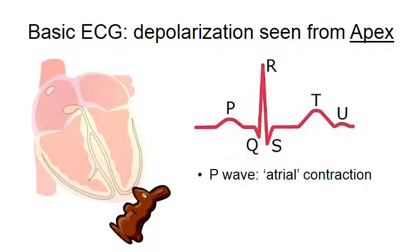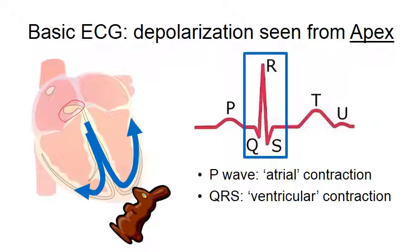After that, there is a perfectly timed delay at the AV node while waiting for the ventricles to fully fill. Then comes the fast conduction through the His-Purkinje system into all of the ventricular muscle. This is recorded in the ECG as the QRS wave which triggers the ventricular contraction. All of these signals were recorded from lead 2 or the chocolate bunny.